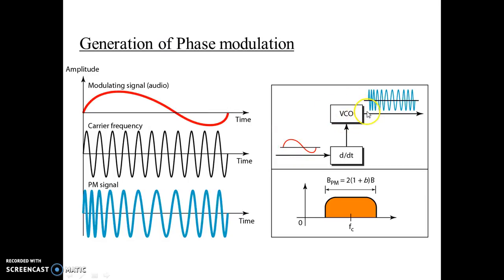For the generation of phase modulation, we use the same blocks as for direct FM modulation. First, the modulating signal — the original audio signal — is given to a differentiating device, usually called a differentiator. The output of the differentiator is then given to the VCO. The output of the differentiator changes the frequency of the VCO, which is a voltage controlled oscillator whose capacitance changes with the applied input voltage.